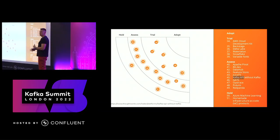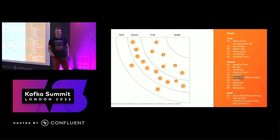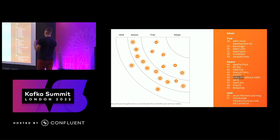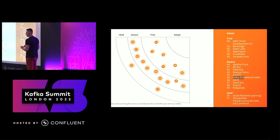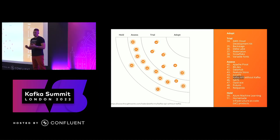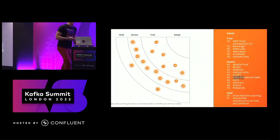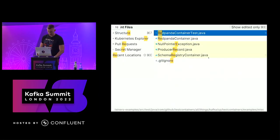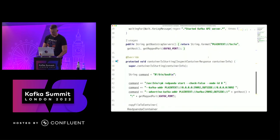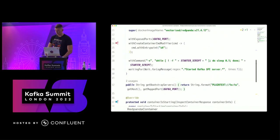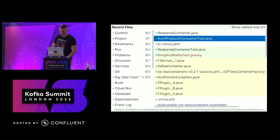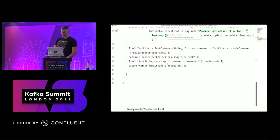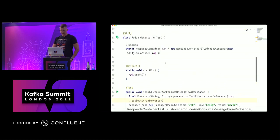Some people took this idea to the extreme - they implemented Kafka in different languages and different systems. There is a Pulsar subsystem for Kafka. There is RedPanda, which is an implementation of the Kafka protocol in an absolutely different language. I was thinking: this is a great example of how you can test integration between systems that claim to have Kafka API compatibility.